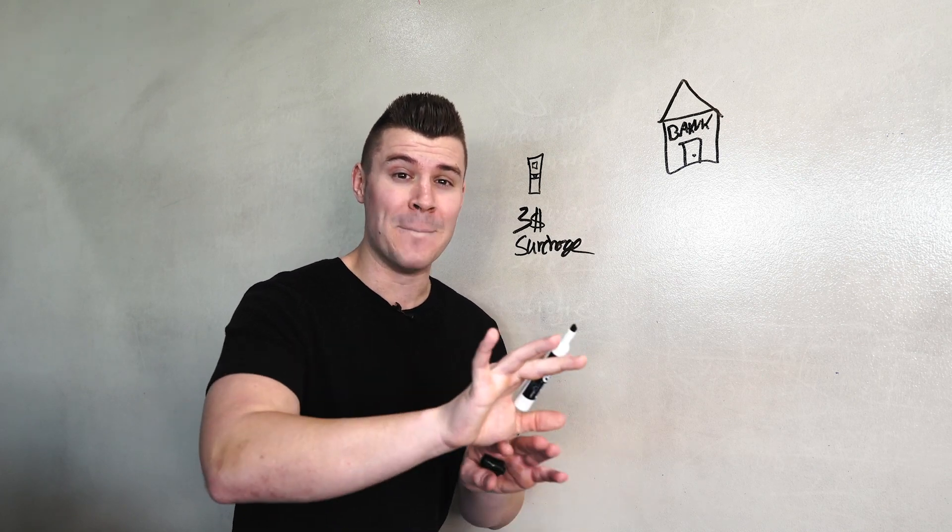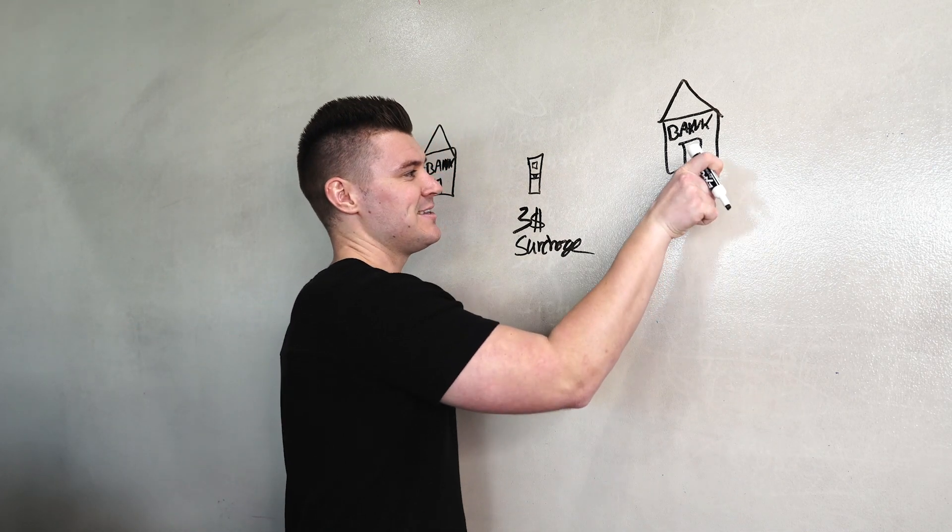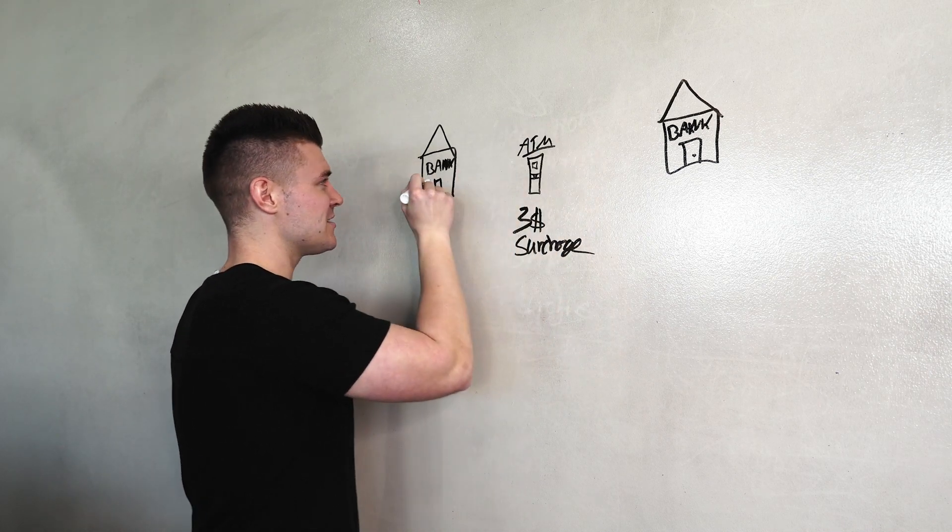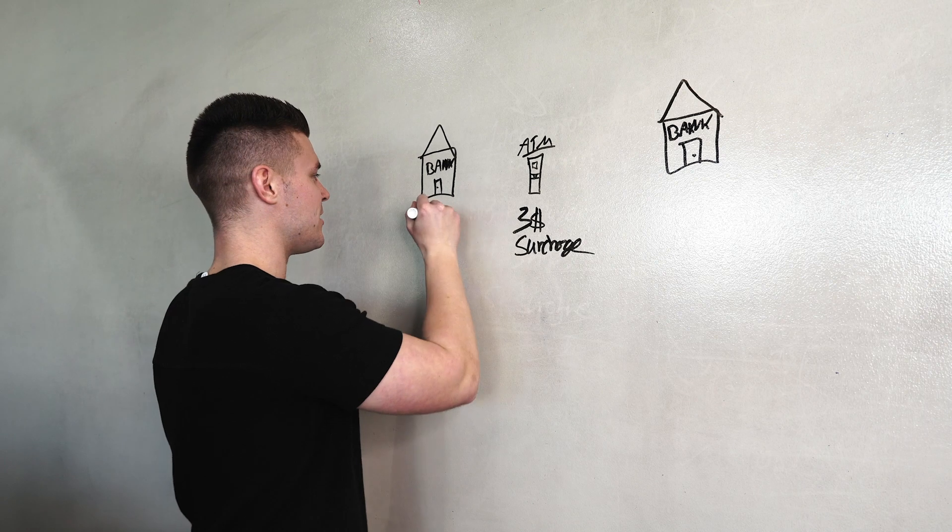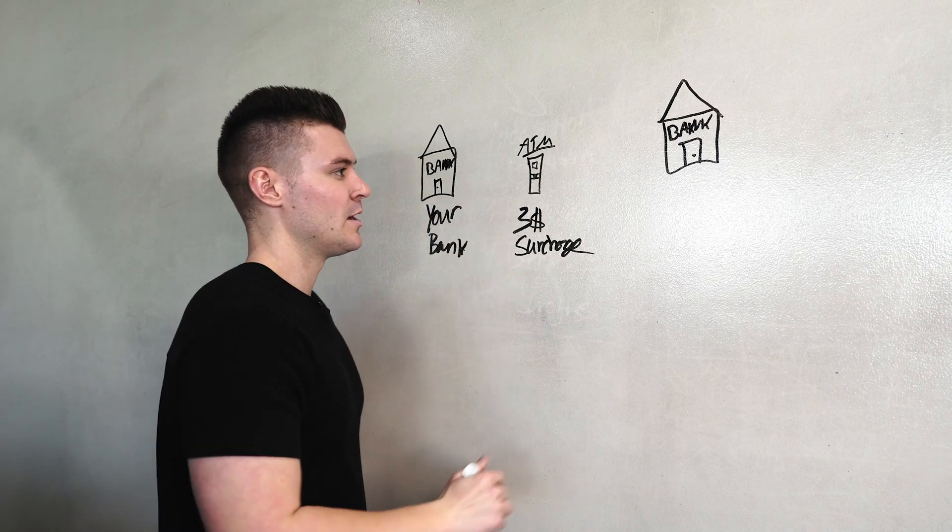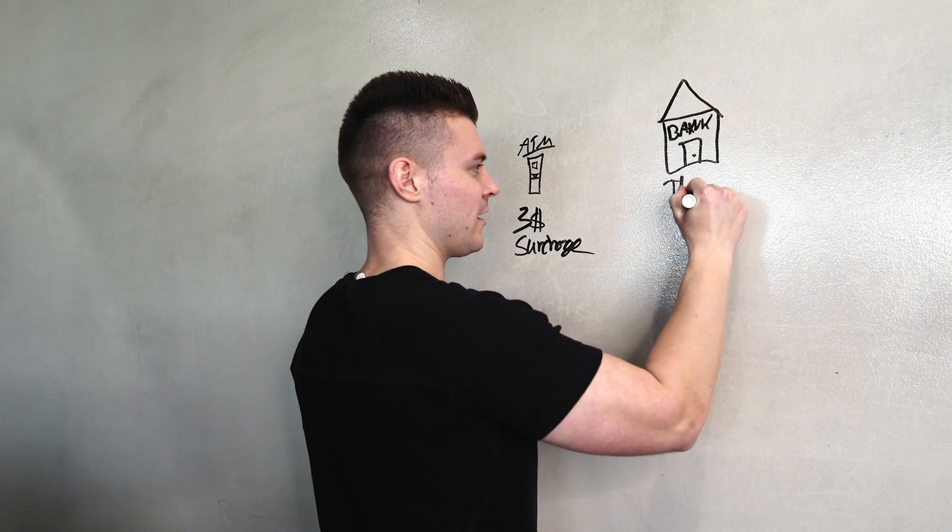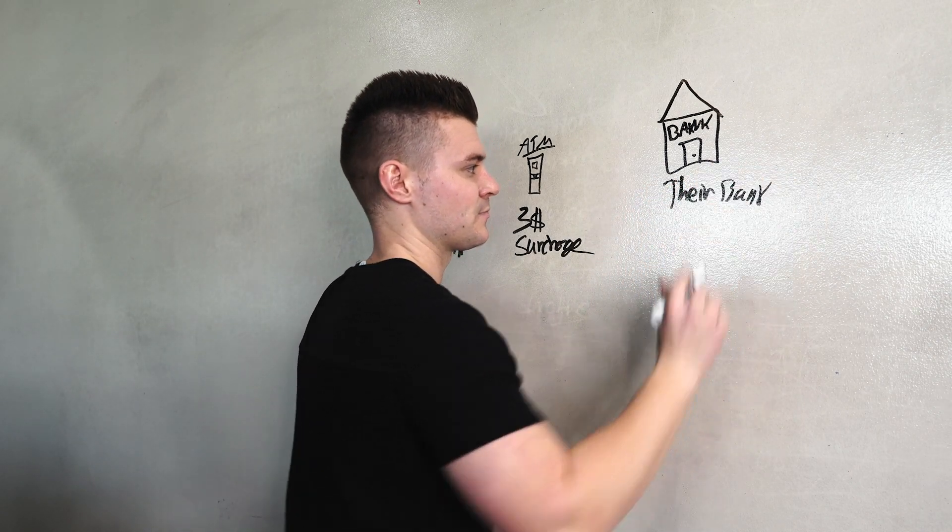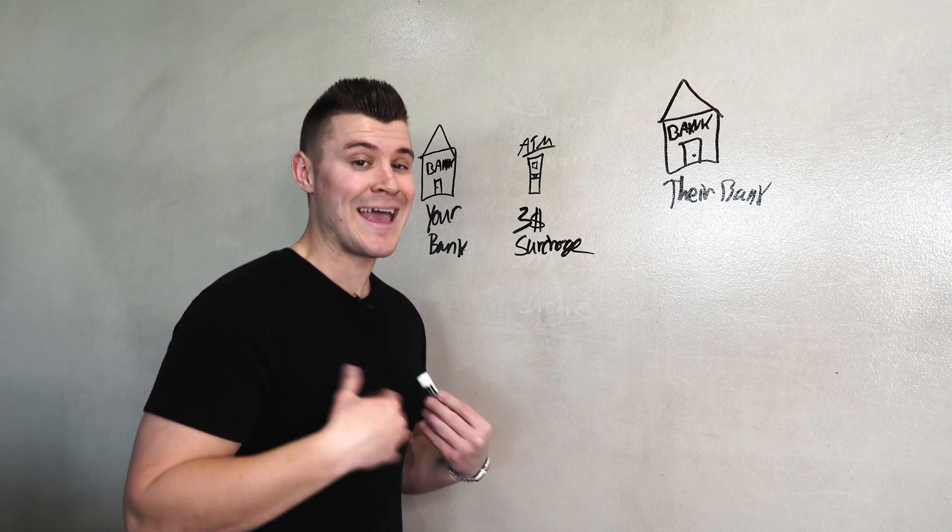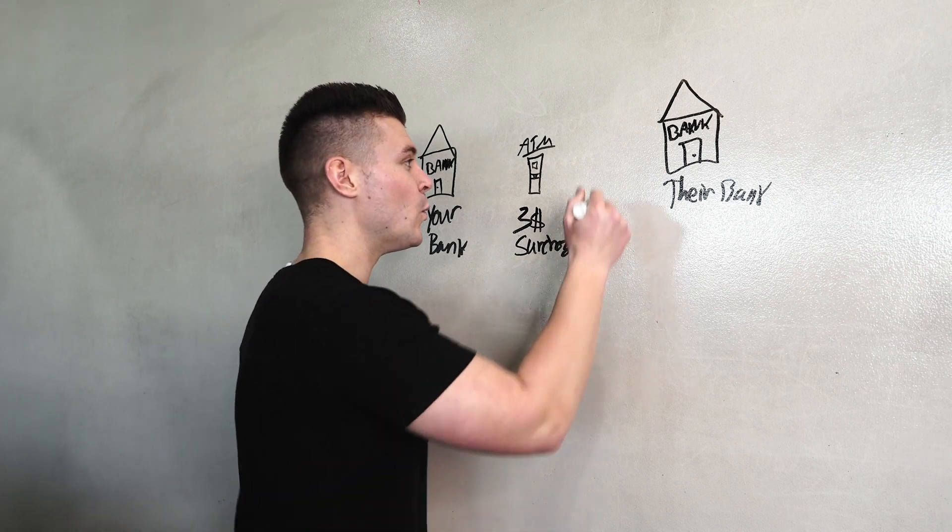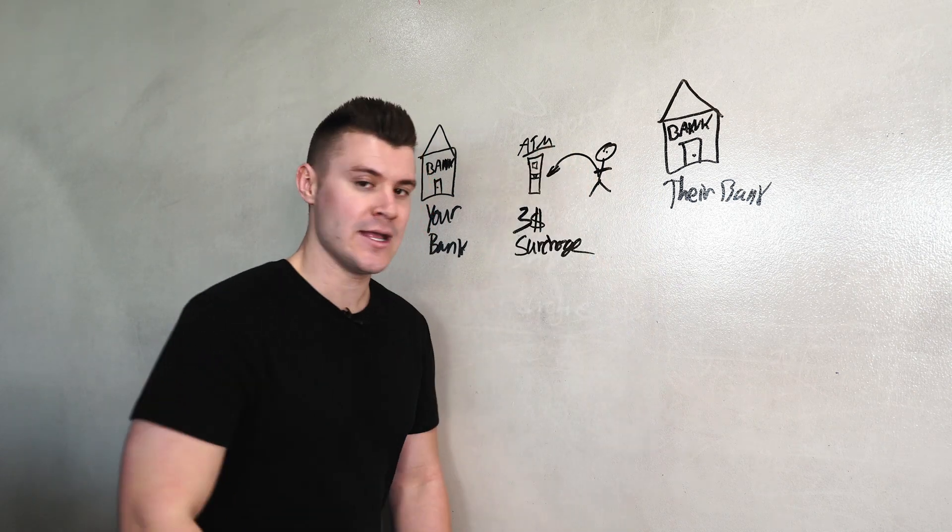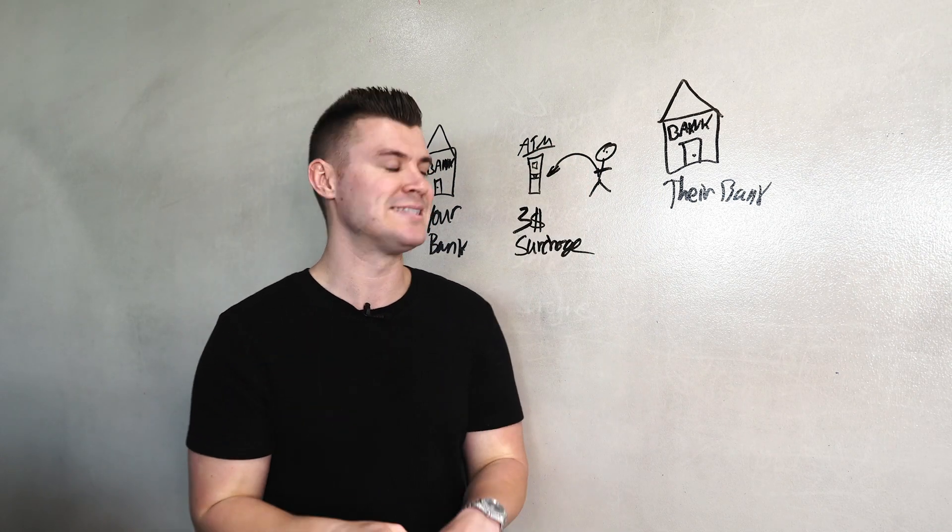I'm going to share that with you guys right here. So let's just break it down. I apologize. My handwriting is absolutely terrible. As you guys can see, this is a bank. This is an ATM and this is our bank. So here is your bank. Here is their bank. Okay. So let's just say you, and a lot of you guys have done it. Heck, I even do it today.